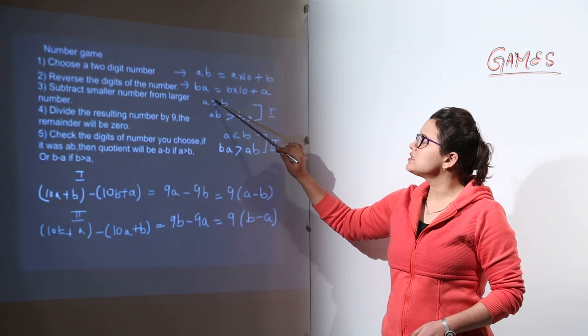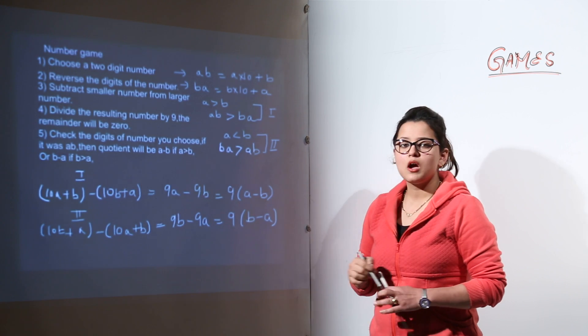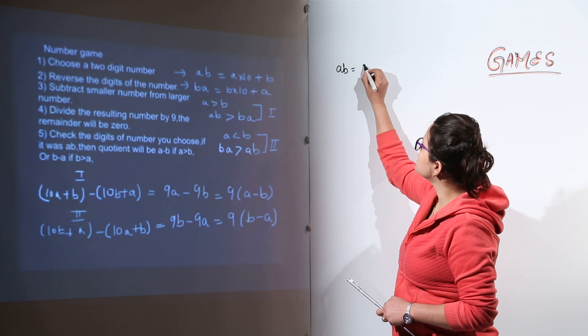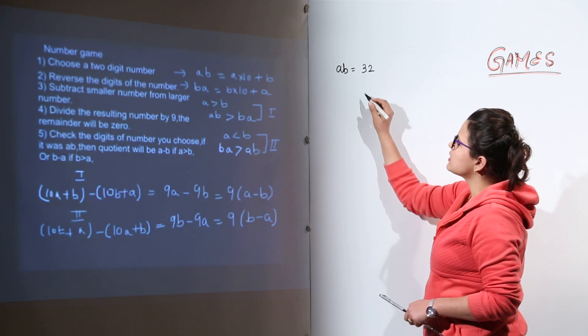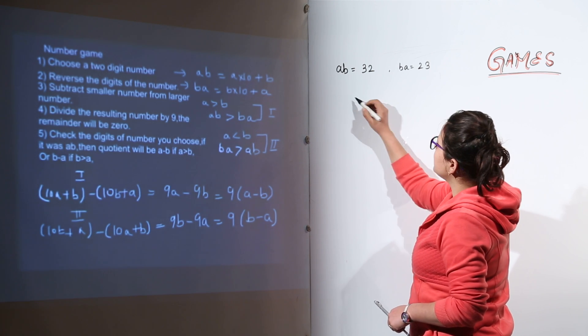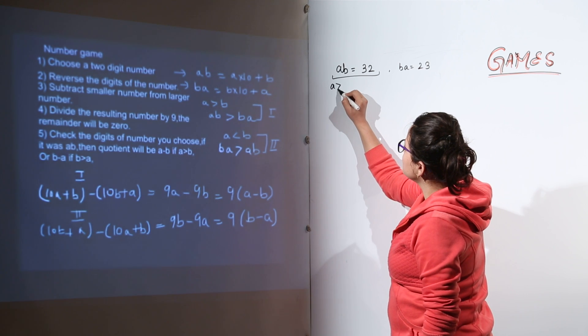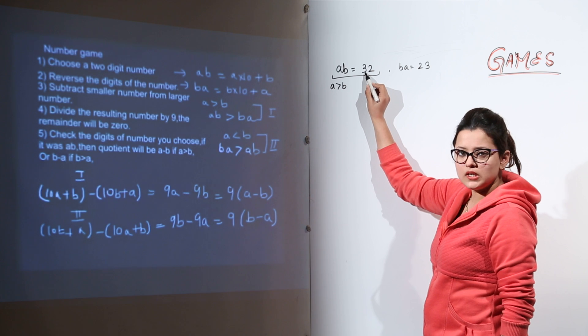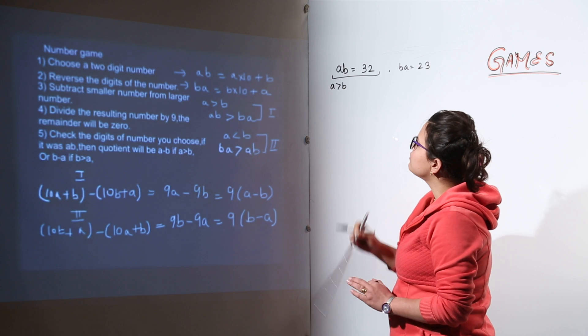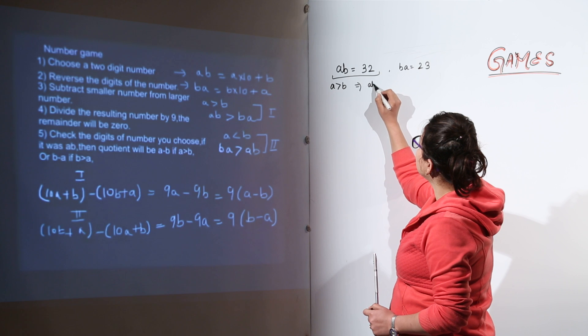So in this case if A is greater than B that means your AB will be greater than BA. How come? Let us take one example. If AB was taken to be say 32. In this case you reverse the digits you would get 23. That means the original number that you have taken is deciding if A is greater than B. Over here what is A? 3 and B is 2. So 3 is greater than 2. That means which one out of both will be greater? If this is the case AB is going to be greater than BA.